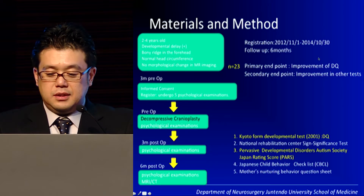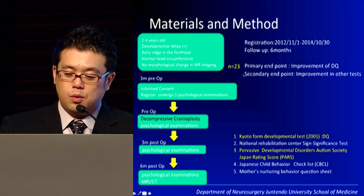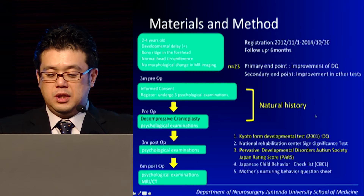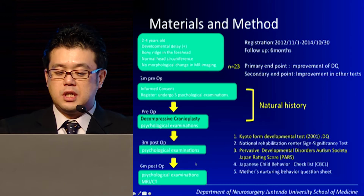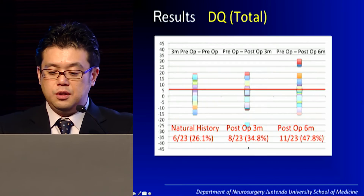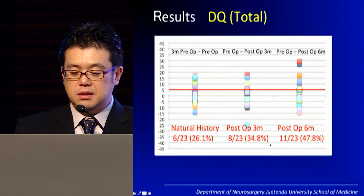Since we don't know the natural history, we conducted a cohort study. We collected 23 cases, waited three months before surgery, and performed five psychological tests defining this as the natural history. We then performed the same tests at three months and six months post-op. Before surgery, one fourth of patients improved in developmental quotient over the three-month waiting period. After surgery at three months, we saw eight cases improving, and almost half of the patients were improving after surgery.